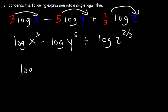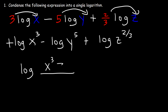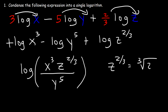Now we can write it as a single log expression. The logs that have a plus sign will go on top, so x cubed and z to the two thirds are going to go in the numerator of this fraction. This one is associated with a negative log, so y to the fifth is going to go on the bottom. And if you want to, you can write z to the two thirds as the cube root of z squared.